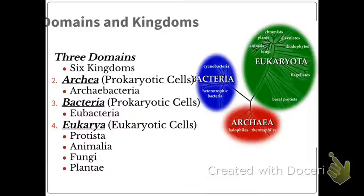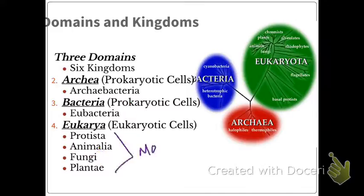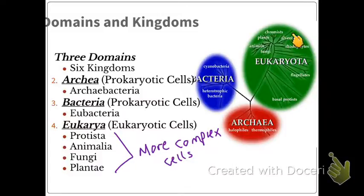Eukaryotic cells belong to the domain eukarya. These include protists, animals, fungus, and plants — these are the more complex cells. Our bacteria have two domains each, and eukarya is one domain with all eukaryotic cells.